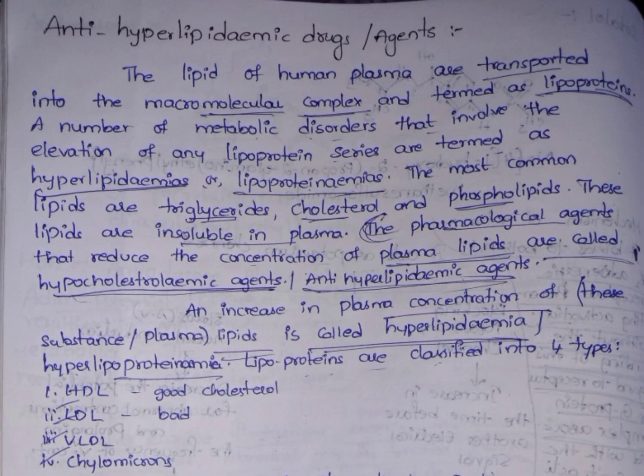The lipids or fats in the human plasma are transported in a macromolecular complex, and these are known as lipoproteins. An increase in the levels of lipoproteins is termed as hyperlipidemia. The pharmacological agents that are used to reduce the concentration of lipoproteins are known as anti-hyperlipidemic drugs. So in your exam if you get a question to define anti-hyperlipidemic drugs, you can write this sentence.